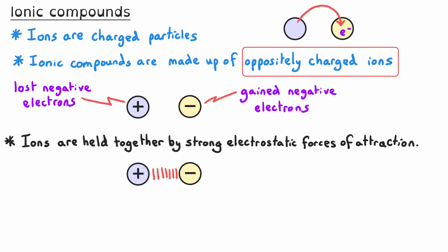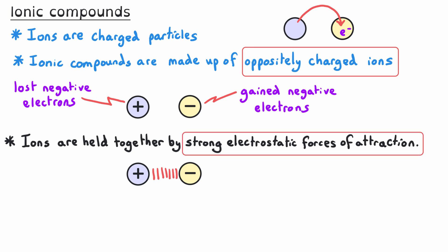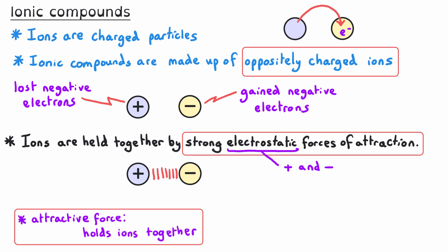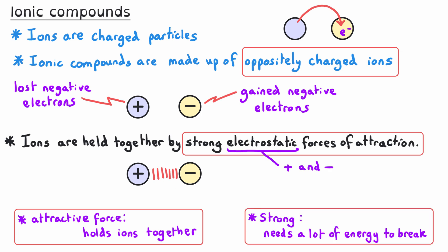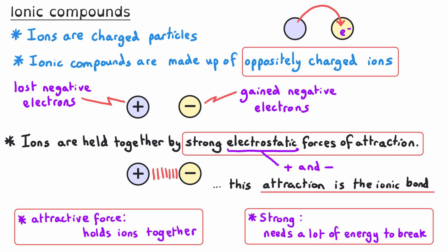The ions in an ionic compound are held together by strong electrostatic forces of attraction. The word electrostatic means we are referring to positively and negatively charged particles — in this case the ions. It's an attractive force holding those ions together, shown here with red lines. Strong means a lot of energy is needed to break them. This strong electrostatic force of attraction is the ionic bond.